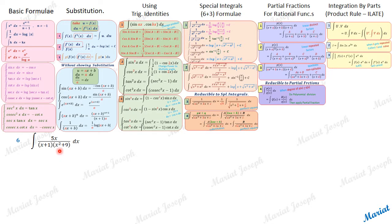The degree of the numerator is 1, and the degree of the denominator is 3 — a first degree factor and a second degree factor, so total degree is 3. Since the degree of the numerator is less than the degree of the denominator, we can go for partial fractions.